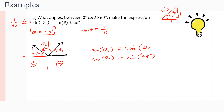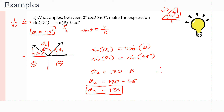Since we know our related acute angle, all we need to do to find θ₂ is compute 180 minus our related acute angle β, which is 45°. This gives us the principal angle in quadrant two, because sine is positive there. So θ₂ = 180 − 45 = 135°. That's our second value. Therefore, θ = 45° or 135°.